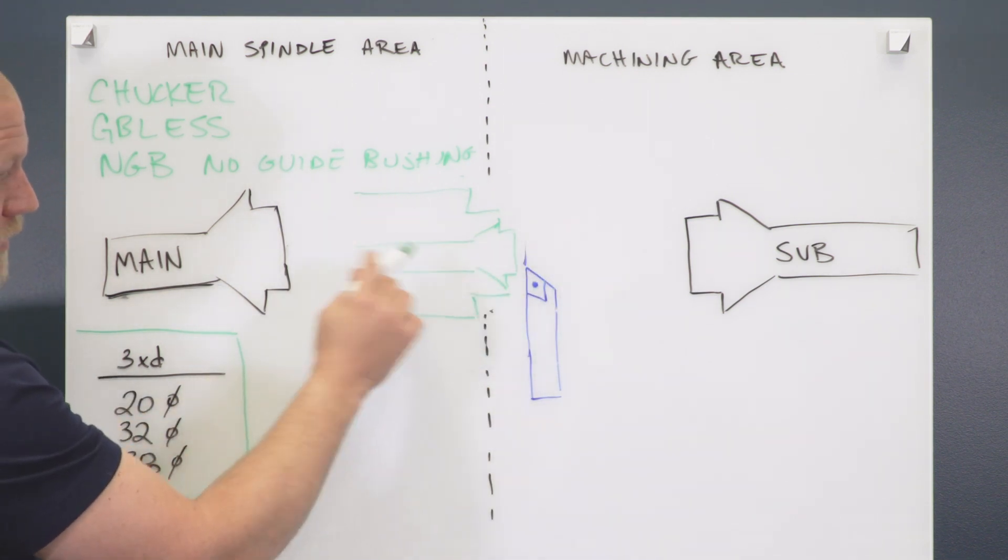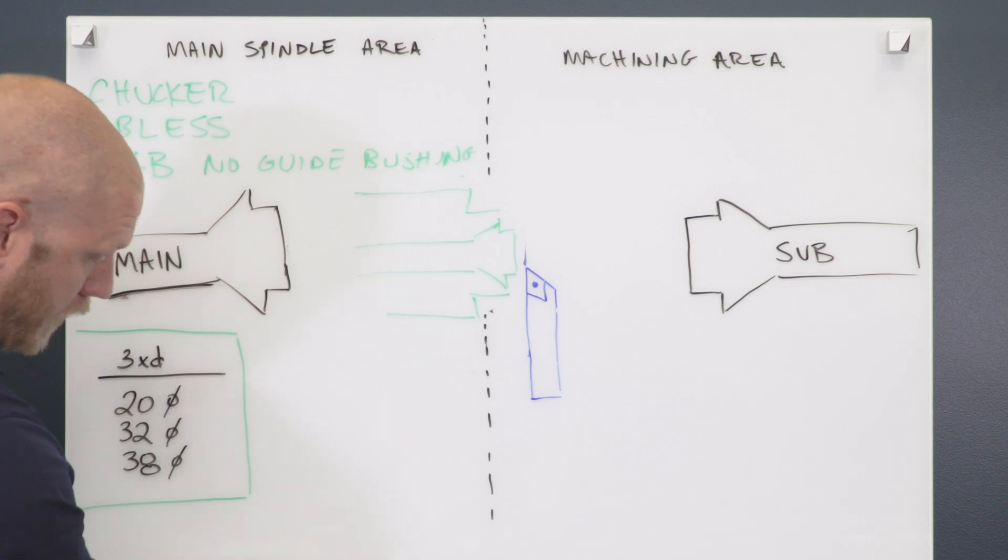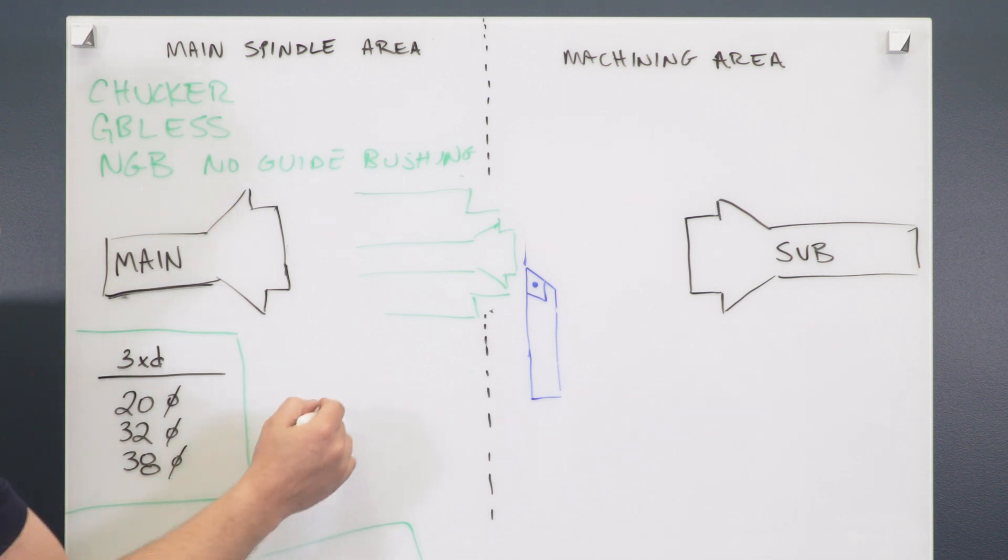What this does is it eliminates that long guide bushing motor length and long remnant length. It also eliminates any kind of ovular shaped parts if you're running non-ground material.